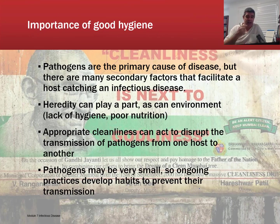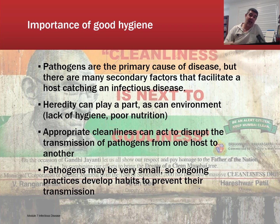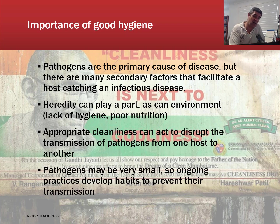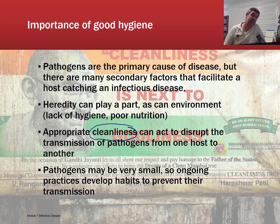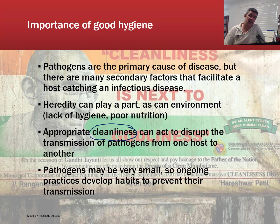Pathogens are the primary cause of disease, but there are also many secondary factors that facilitate hosts catching an infectious disease. We're interested in how pathogens are transmitted from one host to another, the effect they might have on the host, and ways of minimising transmission and preventing exposure. Heredity can play an important part, but cleanliness is one of the keys — something we've understood much more, especially with techniques developed in surgery, and our discovery of antibiotics, which have all helped in our battle against pathogens. Because pathogens are so small we can't see them, we have had to continue developing practices and good habits to minimise or prevent their transmission.